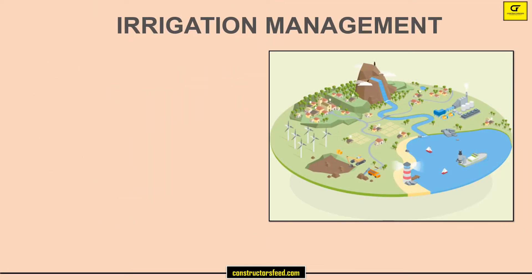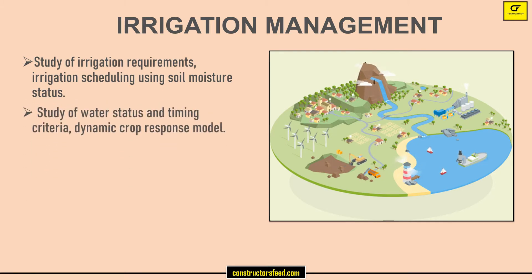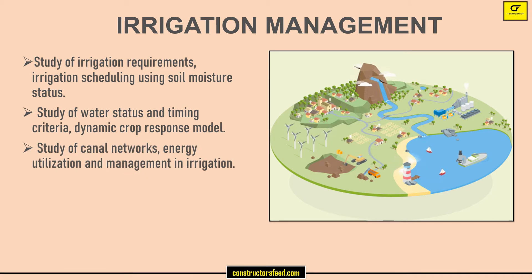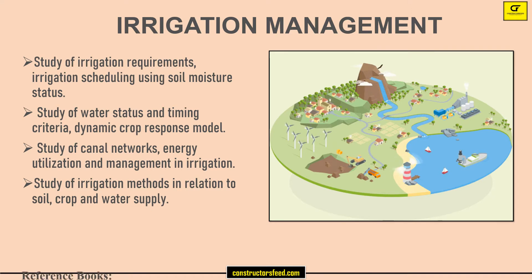Irrigation Management: study of irrigation requirements and irrigation scheduling using soil moisture status; study of water status and timing criteria, dynamic crop response models; study of canal networks, energy utilization and management in irrigation; and study of irrigation methods in relation to soil, crop, and water supply.